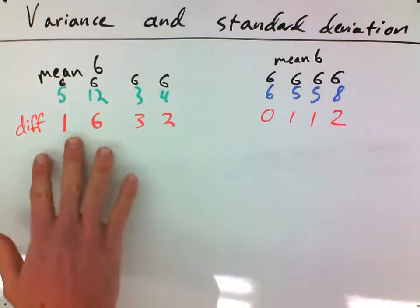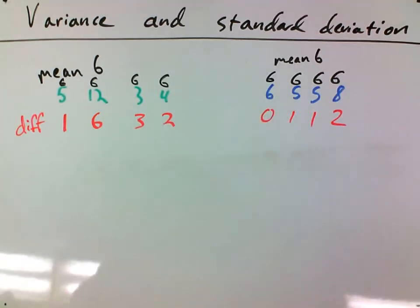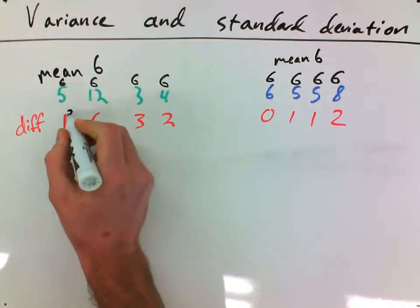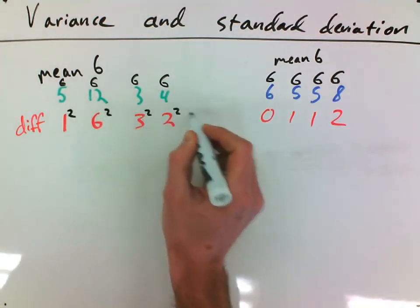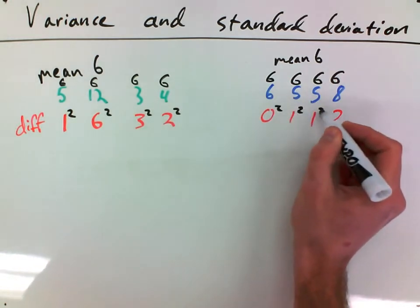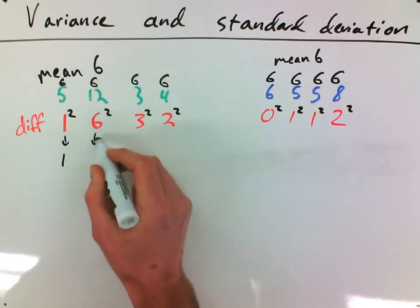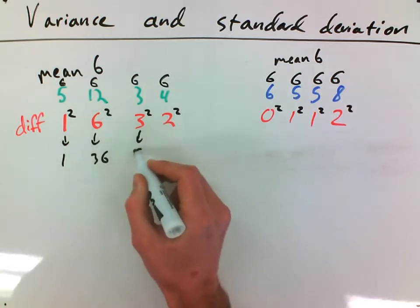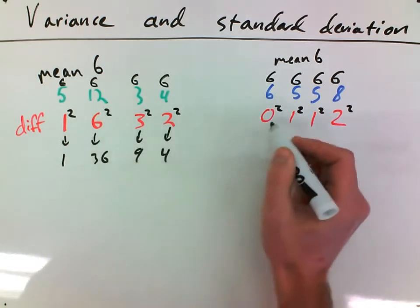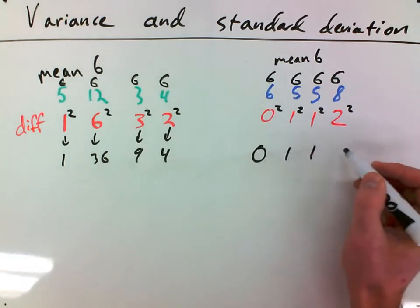So if I was to find the mean deviation, I'd just add these up and divide them. But I'm finding the variance. And so to find the variance, what I've got to do is square each one of these numbers. And so when I square them, I get 1, 36, 9, and 4. Over here I'll get 0, 1, 1, and 4.